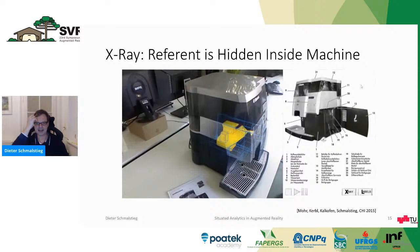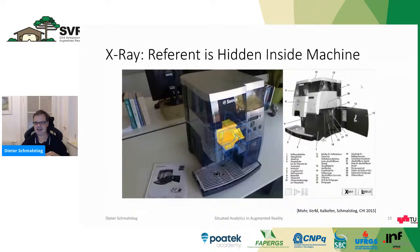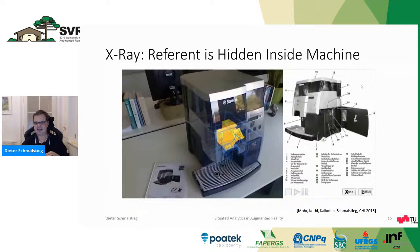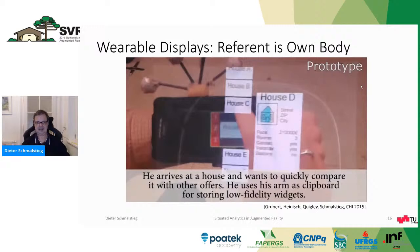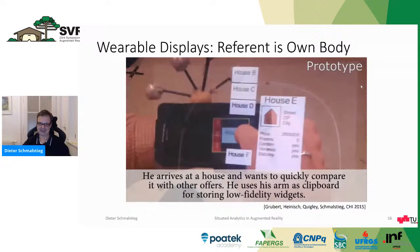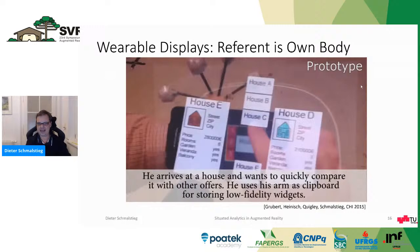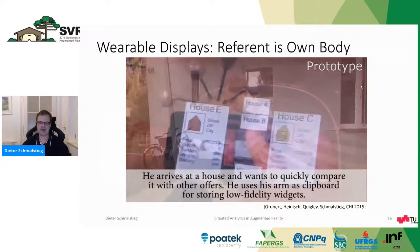Here's another X-ray example: instruction generation for maintenance. With augmented reality and the right input data — in this case computer-aided design data from the manufacturer — we can actually present what is inside the machine as a preview. The referent is hidden inside the machine. Another idea is that the referent can be your own body: your body becomes a canvas for information displays. Here a user with a smartwatch — filmed through a real optical see-through head-mounted display — has the smartwatch screen surface become much larger, with clipboards all around on the forearm where information can be placed.